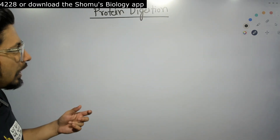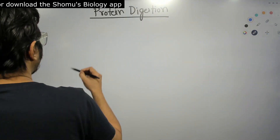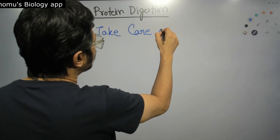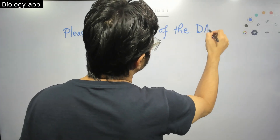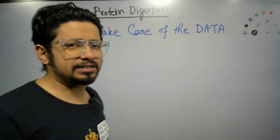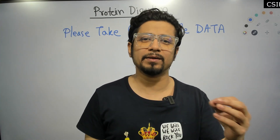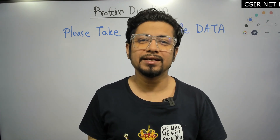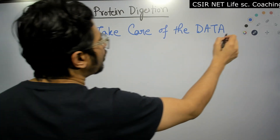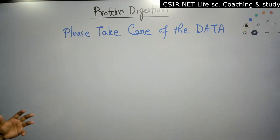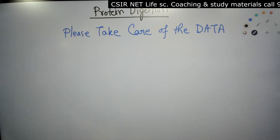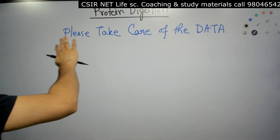For protein digestion, the mnemonic sentence is: 'Please Take Care Of The Data.' It's a very simple sentence. In these days, data is very sensitive and important information is shared with the help of data, so it is said: please take care of the data. If you remember this sentence, you'll get all the enzyme names involved in protein digestion and their locations.